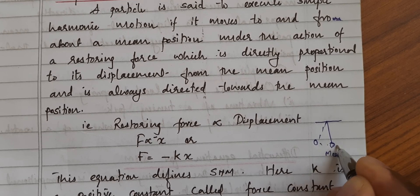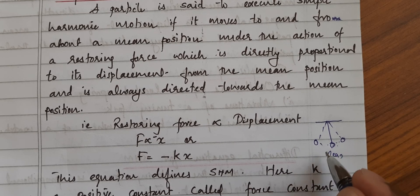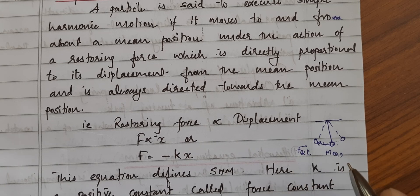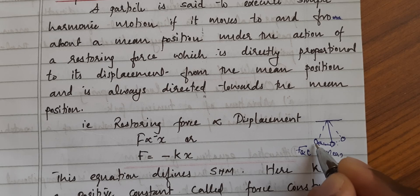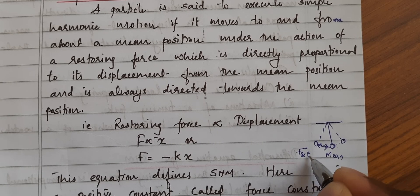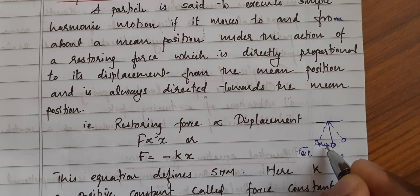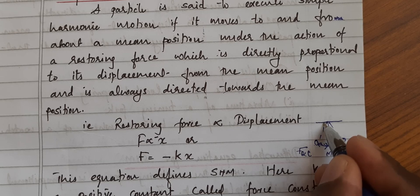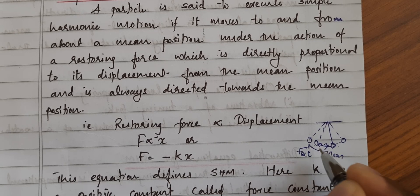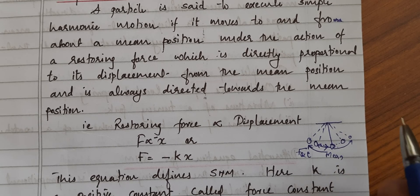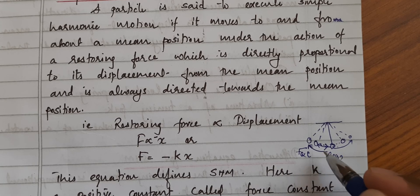Coming back to the pendulum — this is the mean position. Take the pendulum to one side by applying an external force, then release it; it goes back and doesn't stop at the mean position — it goes in the opposite direction. This is because of a restoring force, which acts opposite to the external applied force. The restoring force is greater if the displacement is more — that's why it goes farther on the other side. This is what we mean when we say restoring force and displacement are directly proportional.